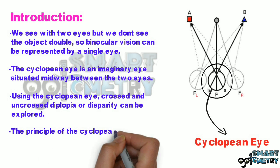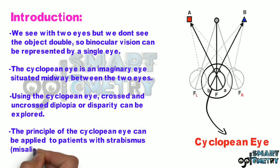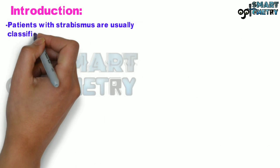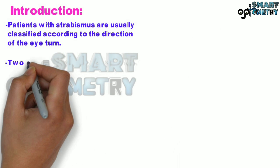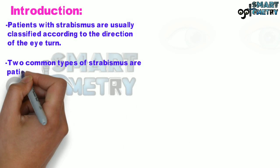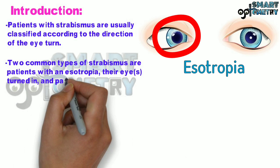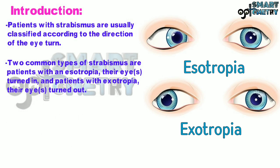The principle of the Cyclopean Eye can be applied to patients with strabismus, i.e., those who have misalignment of eyes. Patients with strabismus are usually classified according to the direction of the eye turn. Two common types are esotropia, with eyes turned in, and exotropia, with eyes turned out.